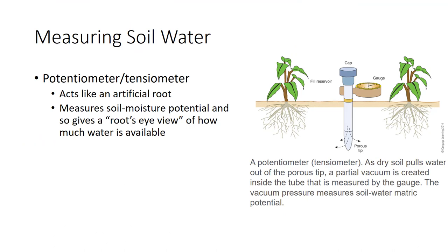From the plant's point of view, the important thing is not how much water is in the soil, but the potential at which it is held. A device called a potentiometer or tensiometer acts like an artificial root — it measures soil moisture potential and gives a root-side view of how much water is available. It is a plastic tube with a vacuum gauge at one end and a porous clay cup at the other. The tightly closed tube is filled with water then buried with the gauge sticking out. Dry soil pulls water out through the clay cup, creating a partial vacuum; the gauge reading then also reads the matric potential of soil water. Potentiometers work best in moist soil at potentials between 0 and negative 0.8 bars.